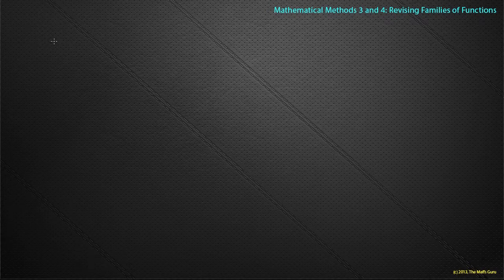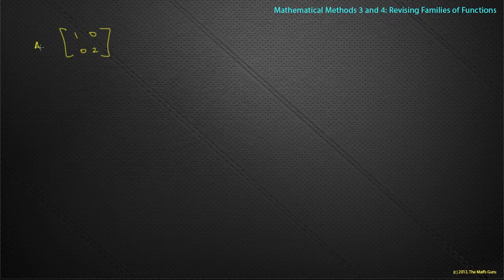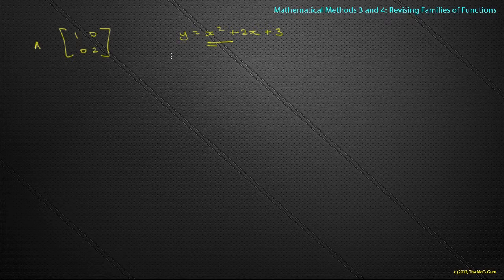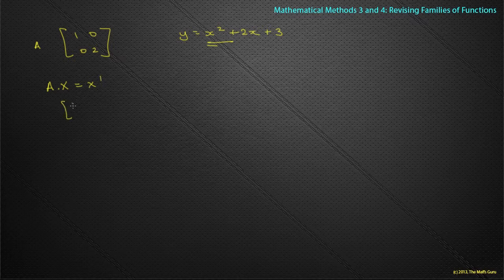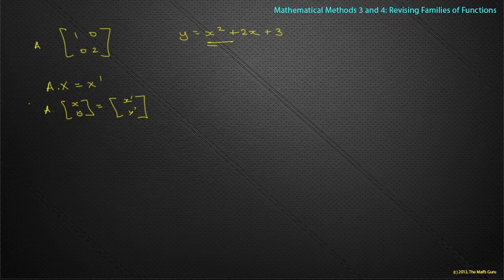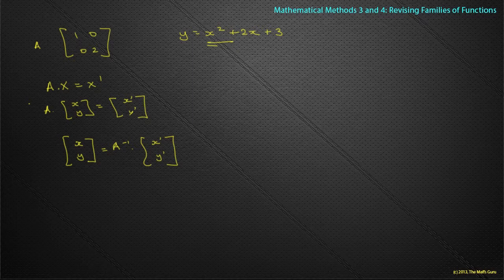I've got a transformation defined by the matrix A = [1, 0; 0, 2], and I want to find the equation of the image of the graph y = x² + 2x + 3. This has only one transformation, so it's nice and simple. We go back to A·x = x-dashed, and remember that x represents my x and y values going on to my image values of x-dashed and y-dashed, multiplied by A. So I now know that the column vector (x, y) equals A⁻¹ multiplied by (x-dashed, y-dashed). We know how to find the inverse of A.